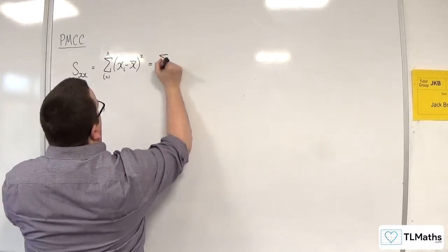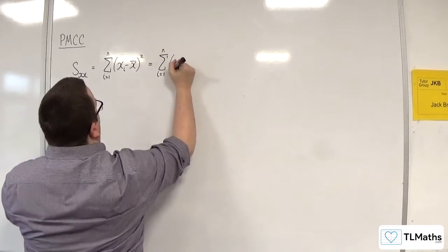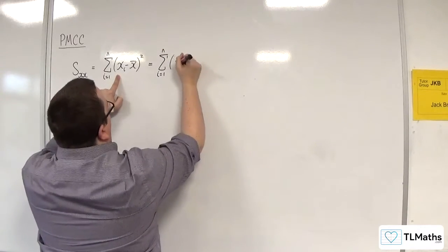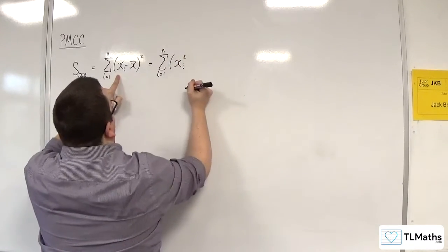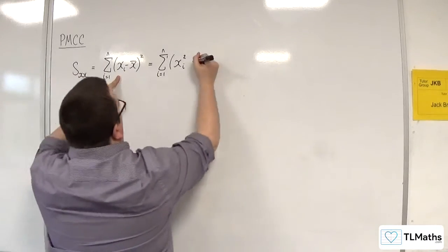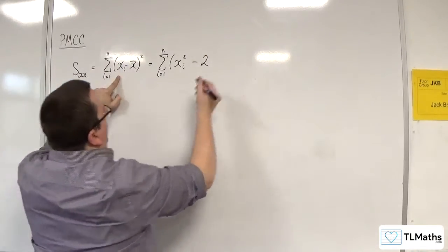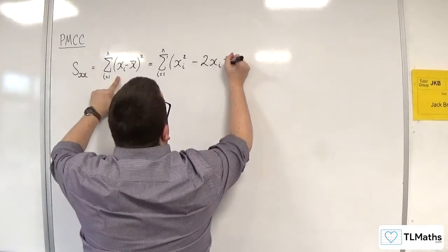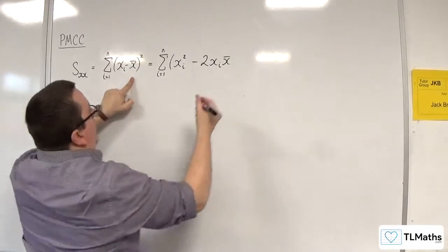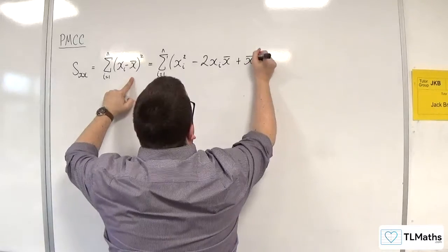So we're going to have the sum from i's 1 to n of XI times XI, so XI squared. We're going to get take away two lots of XI times X bar, and I'm going to get plus X bar squared.